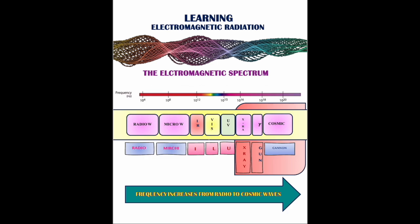The radiations in the electromagnetic spectrum are radio waves, microwaves, IR, UV, visible, X-ray, and gamma rays. How to learn them in order of increasing frequency or decreasing wavelength? The hack says: Radio Mitchi I...